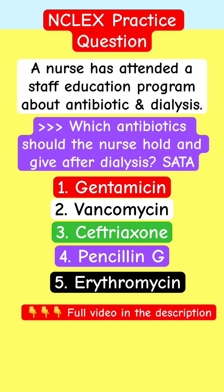1. Gentamicin, 2. Vancomycin, 3. Ceftriaxone, 4. Penicillin G, 5. Erythromycin. If you are taking care of this patient who is due for dialysis and has these five antibiotics available, which one should you hold?